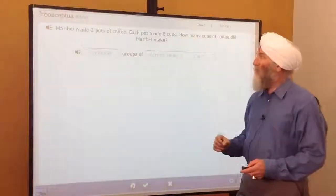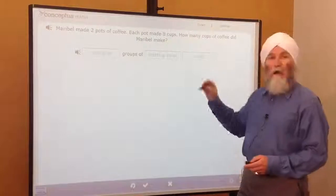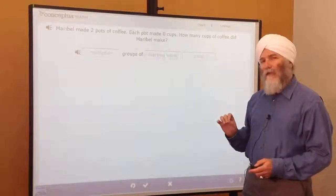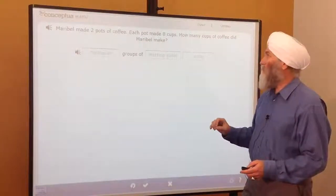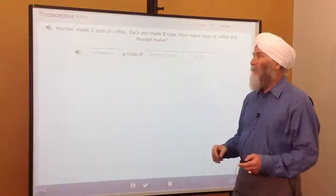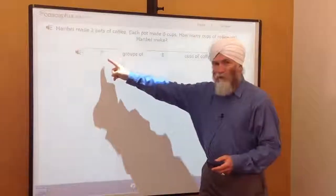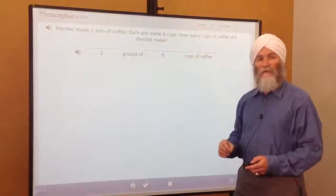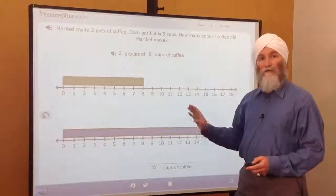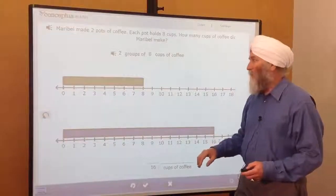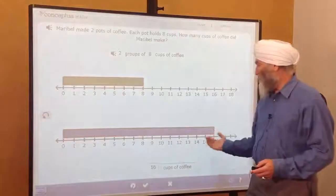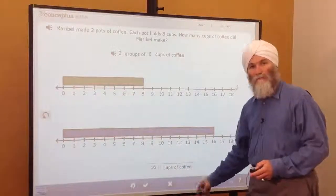Mirabelle made two pots of coffee. Each pot made eight cups. How many cups of coffee did Mirabelle make? We have students analyze and paraphrase the story problem. What's the multiplier? What's the starting value? And what are the units? We have two groups of eight cups of coffee. We teach children how to use a double number line to do the calculation with the whole numbers. Here's the eight cups of coffee, and we're going to make two groups showing 16 cups of coffee.